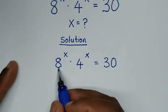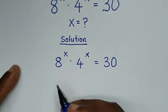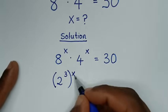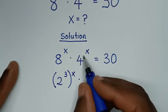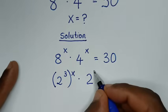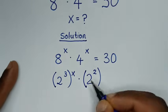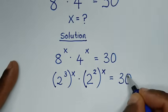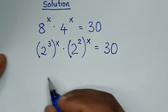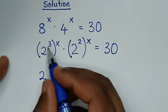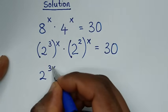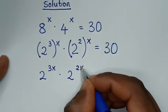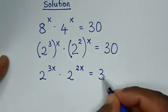Here, 8 is same as 2 power 3, then bracket this power of x, times 4 power x. 4 is same as 2 power of 2, then bracket this power of x, is equal to 30. Then it will be 2 power of 3x times 2 power of 2x is equal to 30.